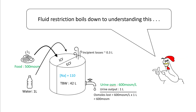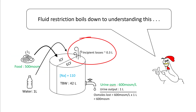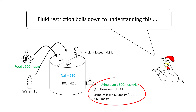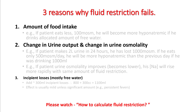Overall, fluid restriction boils down to understanding ins and outs. You have to understand that the sodium in your system depends on the amount of food eaten, insensible losses, and urine output along with urine osmolality. The reason fluid restriction fails is because clinicians are not accounting for the patient's food intake, not monitoring urine output and changes in urine osmolality, and not paying attention to insensible losses. You have to keep all three factors together when calculating fluid restriction.